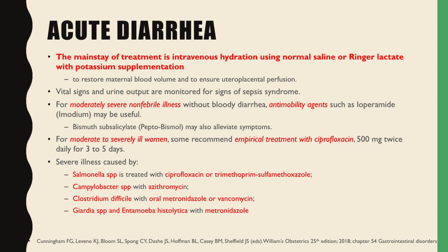Vital signs and urine output are monitored for signs of sepsis syndrome. For moderately severe non-febrile illness without bloody diarrhea, anti-motility agents such as loperamide (usually the brand Imodium) may be useful. Bismuth subsalicylate or Pepto-Bismol may also alleviate symptoms. For women who are moderate or severely ill, some recommend empirical treatment with ciprofloxacin 500 mg twice daily for 3 to 5 days. Severe illness caused by Salmonella is treated with ciprofloxacin. Severe illness caused by Campylobacter species is treated with Azithromycin. Severe illness caused by Clostridium difficile is treated with Metronidazole or Vancomycin. Severe illness caused by Giardia and Entamoeba histolytica is treated with Metronidazole.